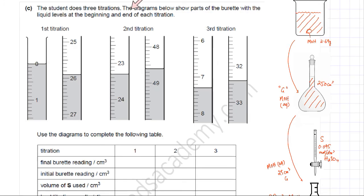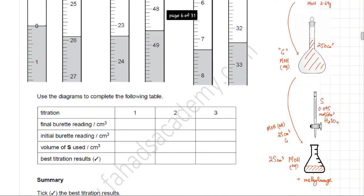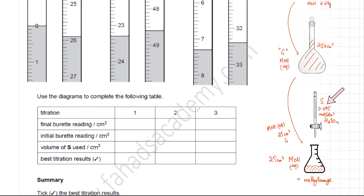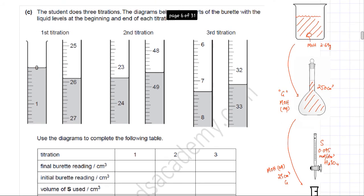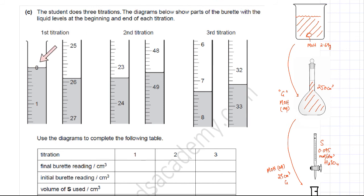The student performs three titrations to improve accuracy, since averaging multiple titrations gives more accurate results. The burette diagram shows liquid levels at the beginning and end of each titration. The volume of S added is the difference between the final and initial burette readings. We need to fill in the results table.